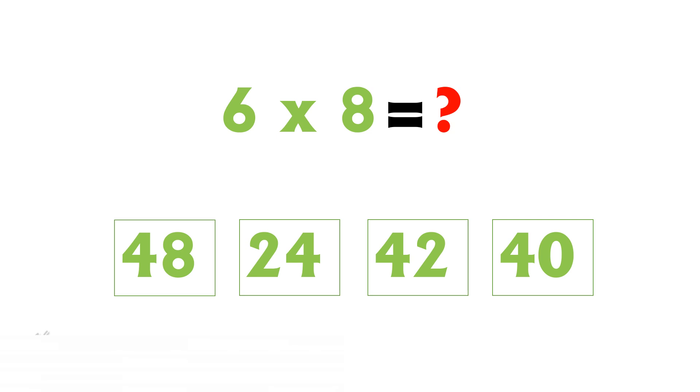Options we have 48, 24, 42, and 40. The correct answer is... 6 eights are 48. 7 sevens are, the correct answer is